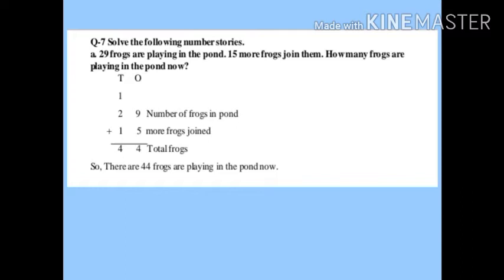For addition, first arrange the numbers — write the tens and ones places, then 29 plus 15. You have to write the statement also. Many students in previous exams only wrote the final answer. You must write every number statement and the last final statement, otherwise your marks will be cut.